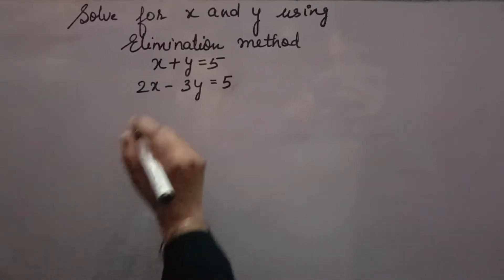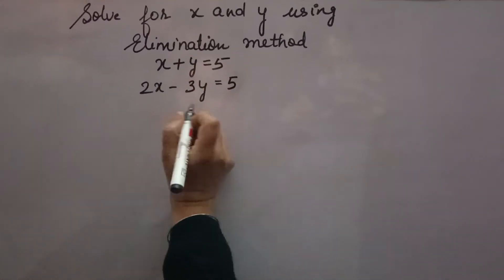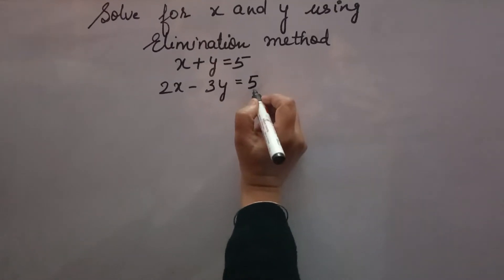Solve for x and y using elimination method. x plus y is equal to 5, 2x minus 3y is equal to 5. These are two equations.